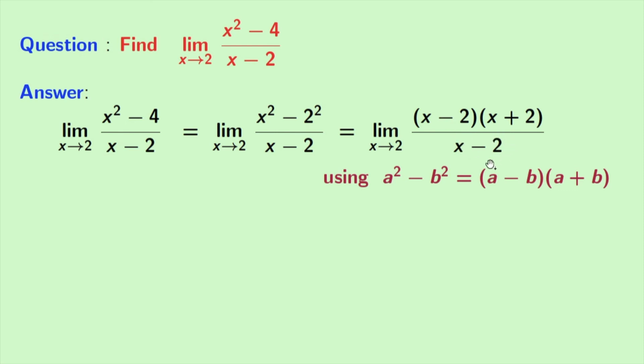So this gets cancelled and we have x + 2. Remember that we have limit x tends to 2, and we can now easily put x equal to 2 here. That gives us 2 + 2, which equals 4, and this is our desired answer.